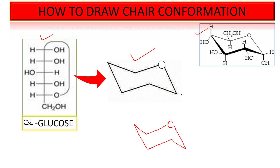Next we have to place the numbers on the carbons. This one is the first carbon, this one is the second carbon, this one is the third carbon, this one is the fourth carbon, and this one is the fifth carbon. The sixth carbon we will address later. So in this way we number the carbons.